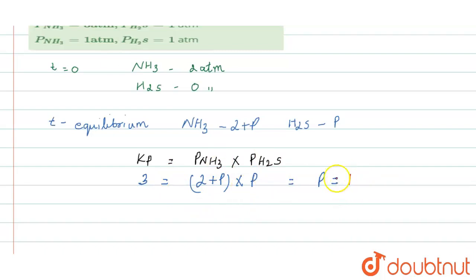Now let us substitute the value. For ammonia pressure, it will be 2 plus P. P value is 1, so this becomes 3 atmospheres.